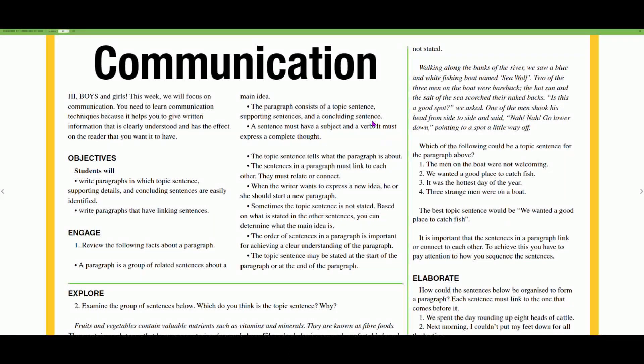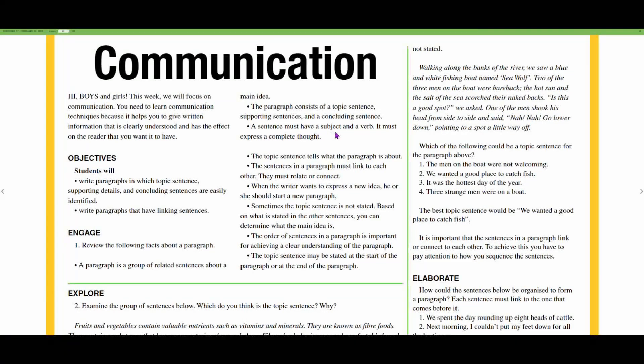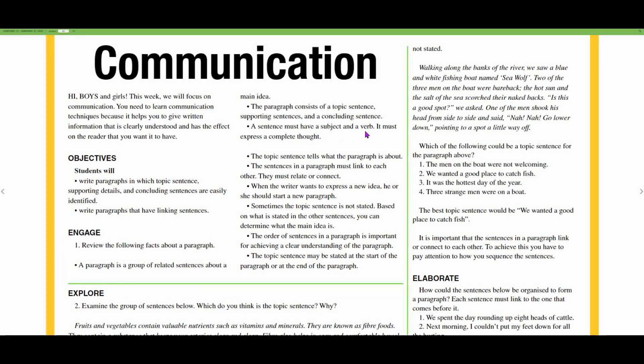A sentence must have a subject and a verb. It must express a complete thought. The subject is the who or what the sentence is about, and the verb is the action that is being described. So you have the subject and the predicate.